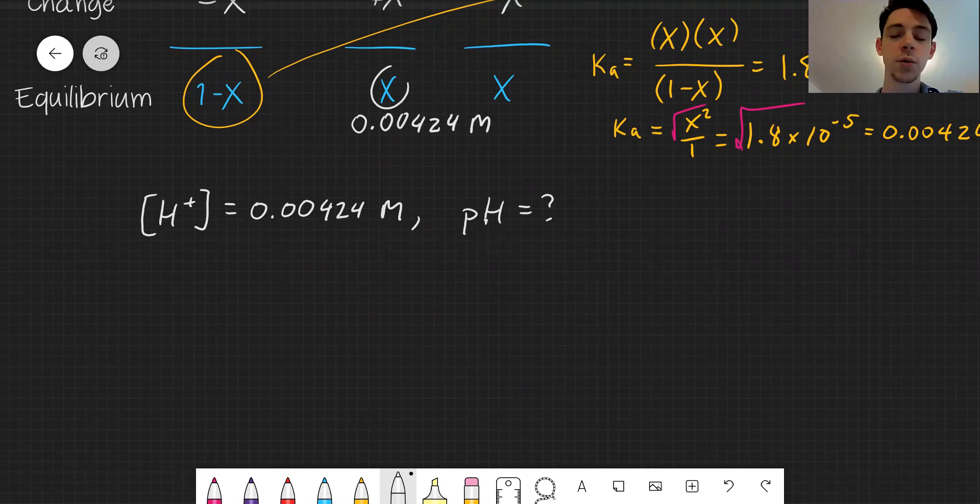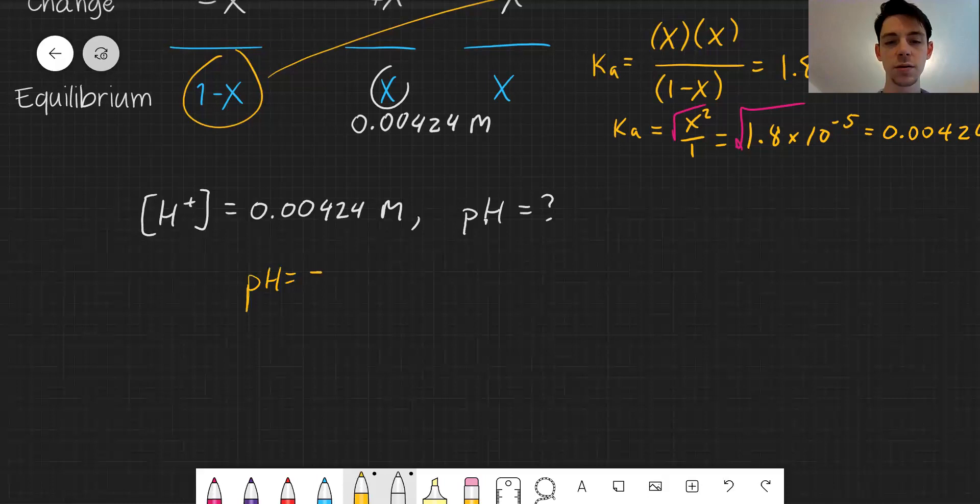So we've got this one molar vinegar solution or acetic acid. What would be the pH? Now that we know the hydronium ion concentration, we can simply use our expression pH equals negative log of hydronium.